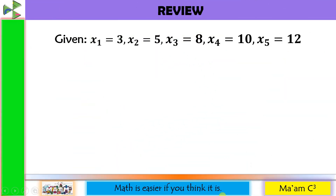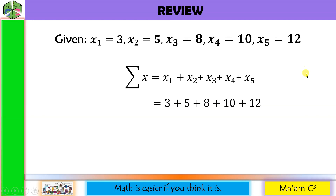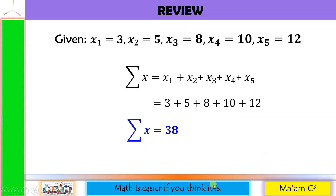Let's have a quick review of our previous lesson: the summation. We have here the given x sub 1 to x sub 5. Summation of x with no lower and upper limit means we are going to get the sum from x sub 1 up to x sub 5. So we have x sub 1 plus x sub 2 plus x sub 3 plus x sub 4 plus x sub 5. Adding them: 3 plus 5 is 8, plus 8 is 16, plus 10 is 26, plus 12 is 38. Summation of x is equal to 38.